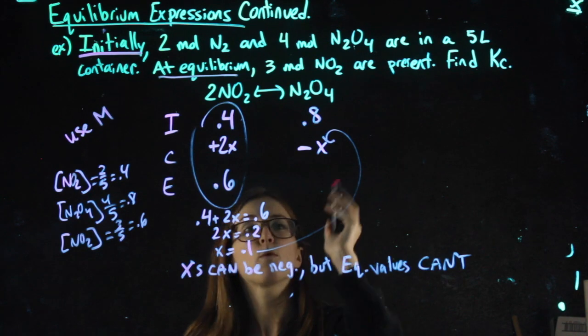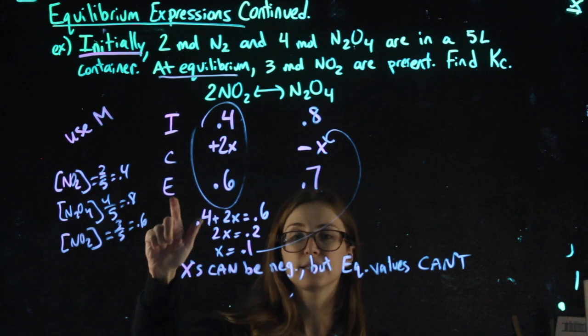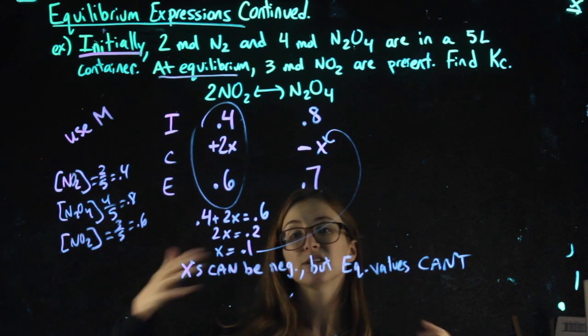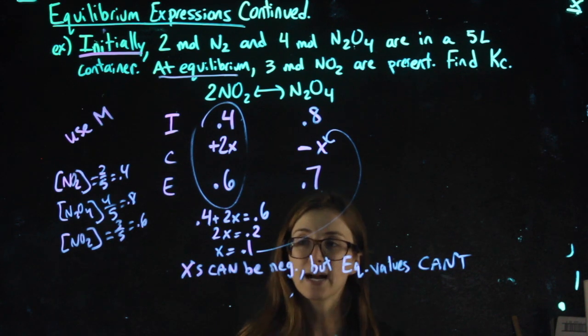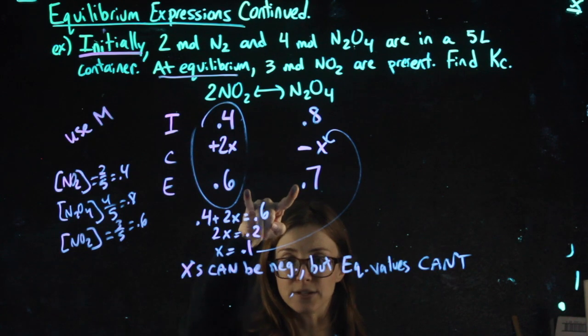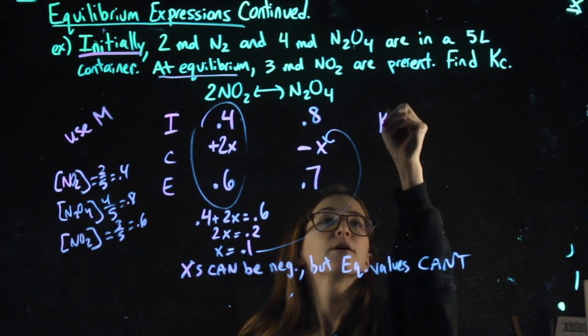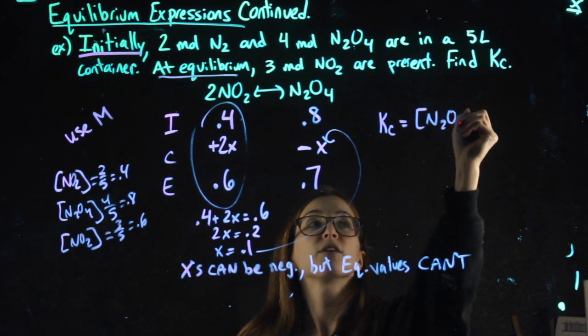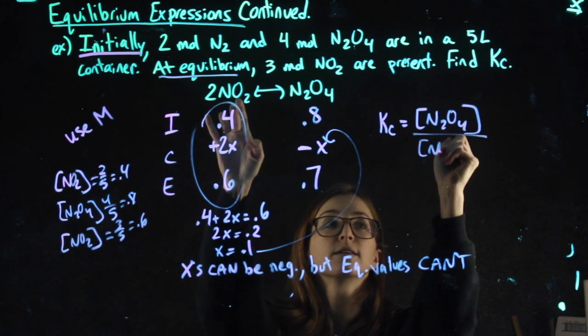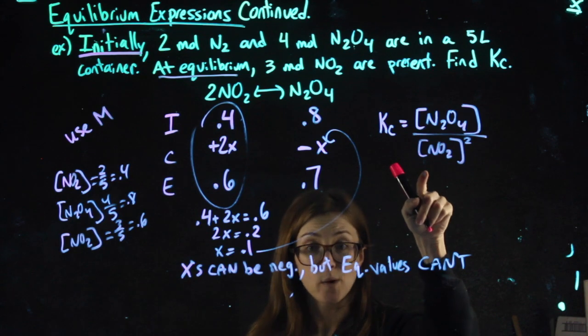And now this E row represents equilibrium. We told you first semester it represented end. There isn't necessarily an end to these reactions, but there is a point where they reach equilibrium. These equilibrium values can be plugged into my KC expression. Again, I'm going to write the expression with nothing plugged in first, just products over reactants, coefficients becoming exponents. That gets me a point.